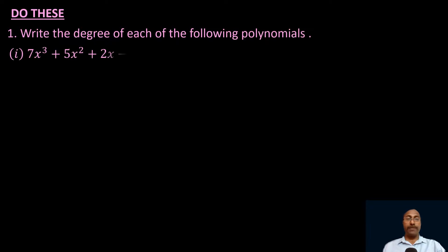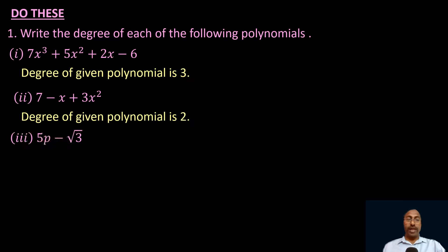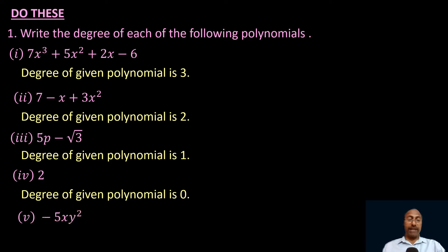Write the degree of each of the following polynomials. First: 7x cube plus 5x square plus 2x minus 6 — the highest power of the variable is 3, so the degree is 3. Second: 7 minus x plus 3x square — the highest power is 2, so the degree is 2. Third: 5p minus √3 — the highest power of p is 1, so the degree is 1. Fourth: 2 — a constant has degree 0. Fifth: minus 5xy square — the degree is 1 plus 2 equals 3.